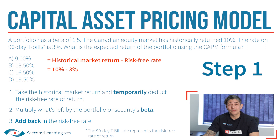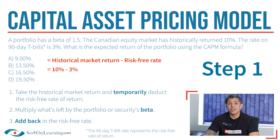Step one: the historical market return is 10%, so we temporarily deduct the risk-free rate of 3%, and 7% remains.